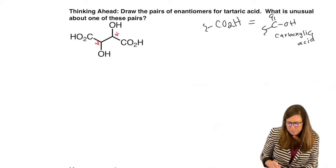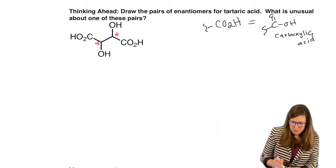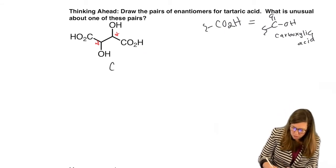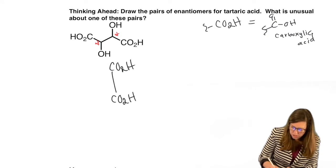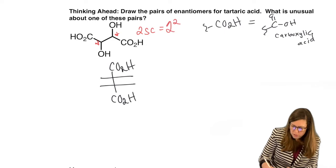But now look at this one. No head, because they're the same, they're both carboxylic acids, so it doesn't matter which one we put there. So let's do CO2H, CO2H. Now, because we have two stereocenters, that means we have 2 to the 2 equals 4 max possible stereoisomers.